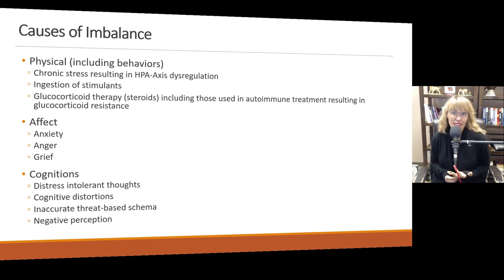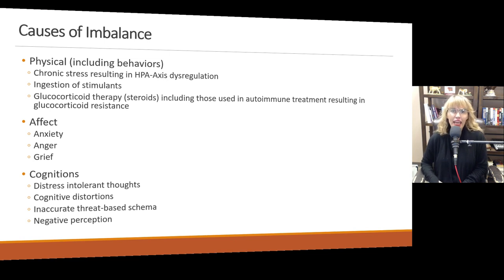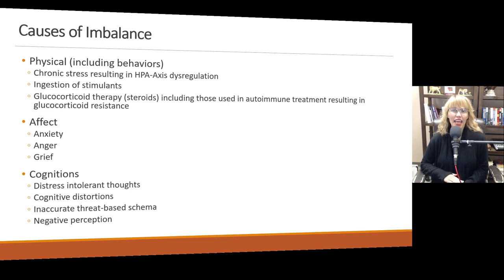Ingestion of stimulants can be a cause of adrenaline imbalance — or inadequate adrenaline or adrenaline not being able to do its job effectively. And glucocorticoid therapy or steroids, including those used to treat autoimmune issues, can result in glucocorticoid resistance. When you are taking high levels of steroids, more than what your body would naturally produce, your body is going to develop a tolerance and it can end up causing glucocorticoid resistance, so your body does not respond the same way when the HPA axis is activated.